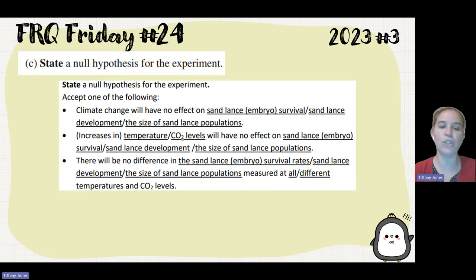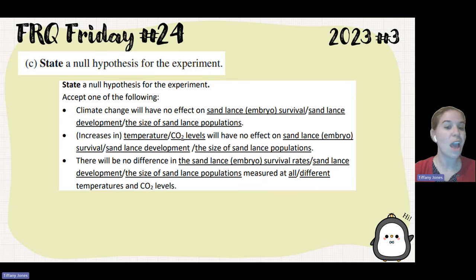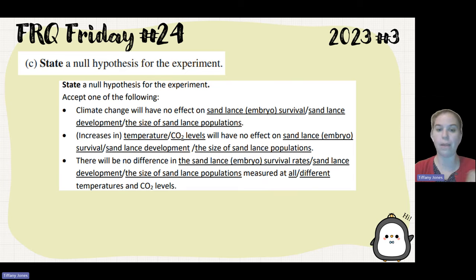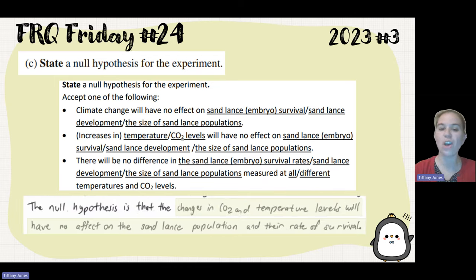Here are different acceptable versions: climate change will have no effect on sandlance embryo survival, sandlance development, or the size of the sandlance population. Or, increasing temperature and carbon dioxide levels has no effect on embryo development and population size. Or, there would be no difference in survival rate, development, or size measured at the different temperatures. A student answered: the null hypothesis is that changes in carbon dioxide and temperature levels will have no effect on the sandlance population and their rate of survival.